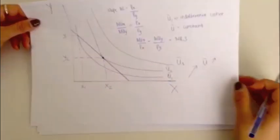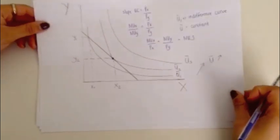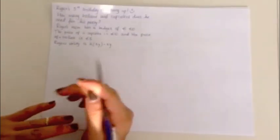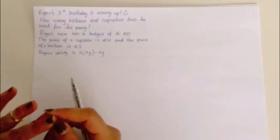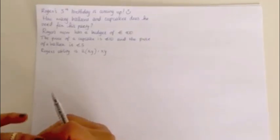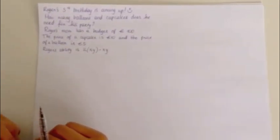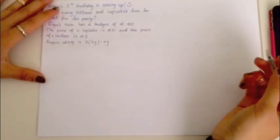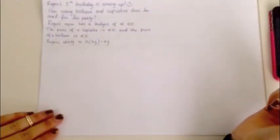Perfect. Okay, now let's try this out with a question. So, our scenario is, it's Roger's fifth birthday coming up, and he wants to know how many balloons and cupcakes he will need for his party, or he should buy for his party. The budget for this party is 100 euros. The price of cupcakes is 10, and the price of balloons is 5. His utility is U equals X times Y.